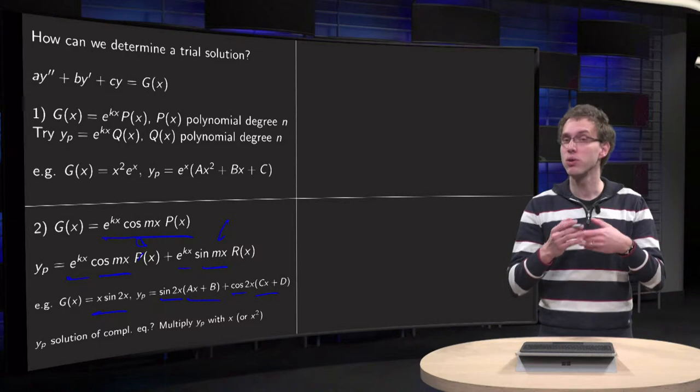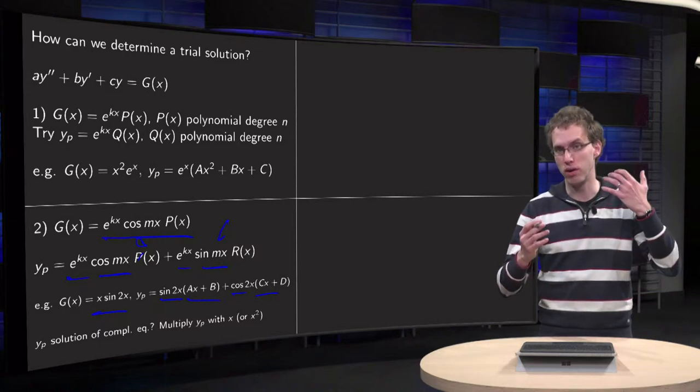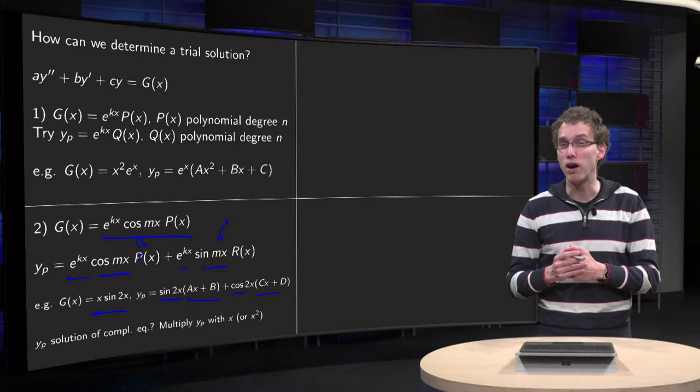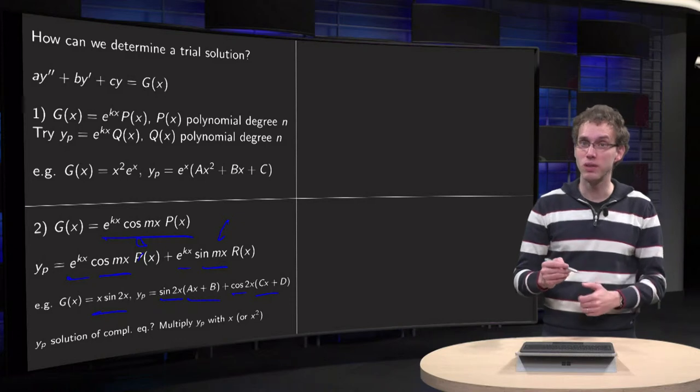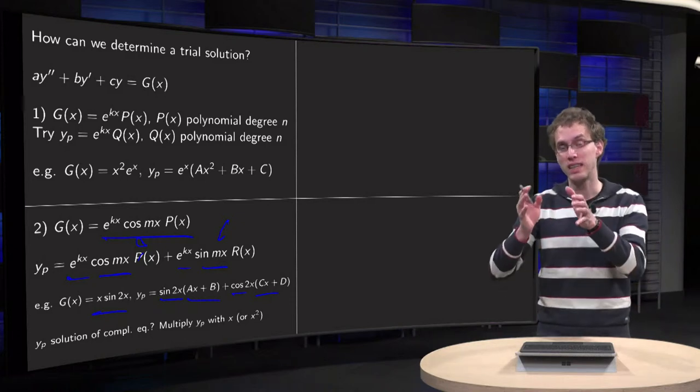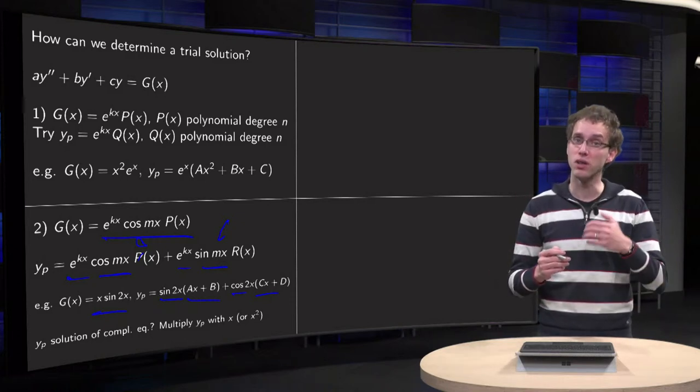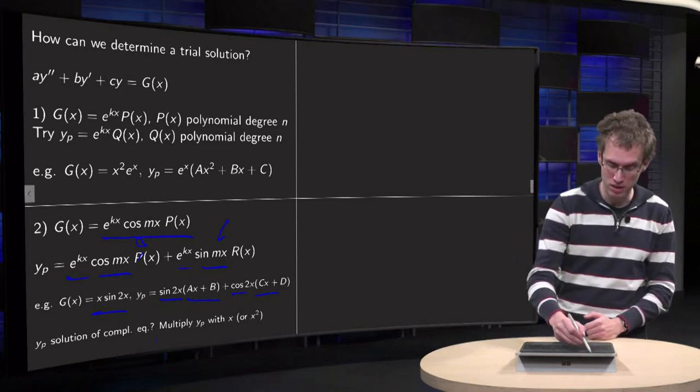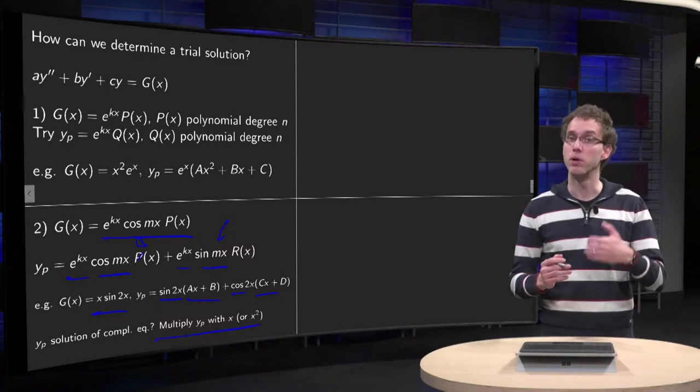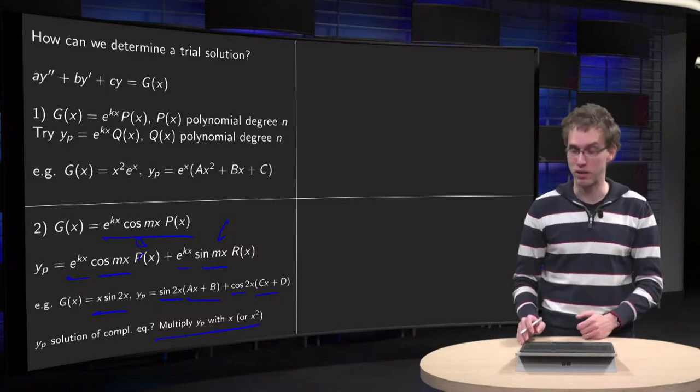This always works like this if your right-hand side is not part of the solution of the complementary equation. So what should you do if your right-hand side happens to be a solution of the complementary equation? In that case, take the same y_p, but multiply with x or with x squared if necessary.